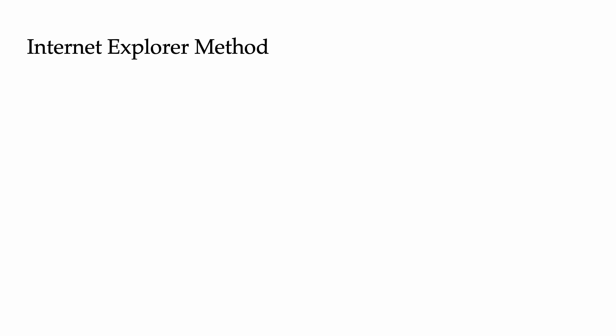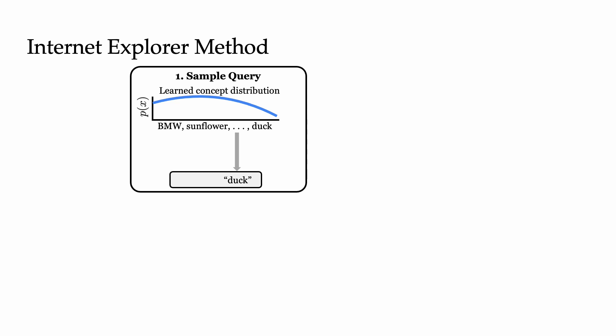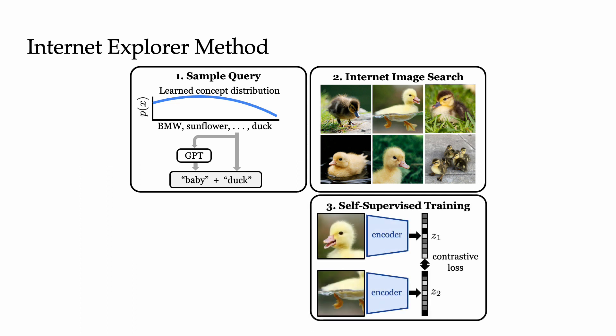This brings us to our Internet Explorer method. In the first step, we sample queries. We use a vocabulary of about 150,000 different concepts drawn from WordNet, and we learn a distribution over these concepts. This distribution assigns high probability to concepts thought to be useful and low probability to concepts thought to be irrelevant. We sample a concept from this distribution and optionally use a language model to sample a descriptor that will give us more visual variety in our results. We use our generated query to download images from an online text-to-image search engine. Then we perform self-supervised training on the downloaded images, using MoCoV3 to minimize a contrastive loss.